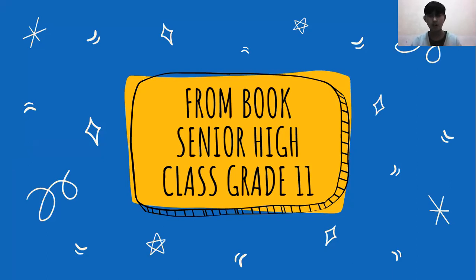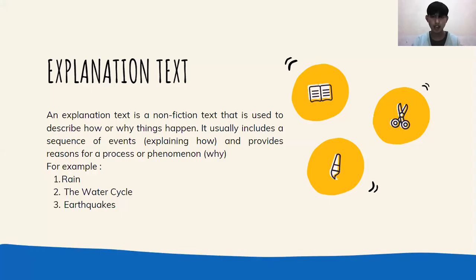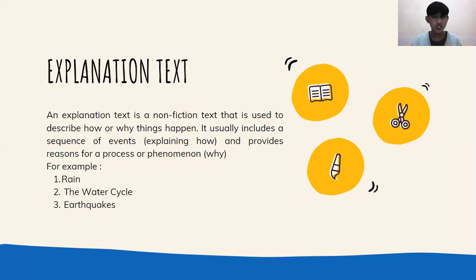In this chapter, we talk about explanation text. What is explanation text? Explanation text is a non-fiction text that is used to describe how or why things happen. It usually includes a sequence of events explaining how, and provides reasons for the process of a phenomenon. For example: rain, the water cycle, and earthquakes.